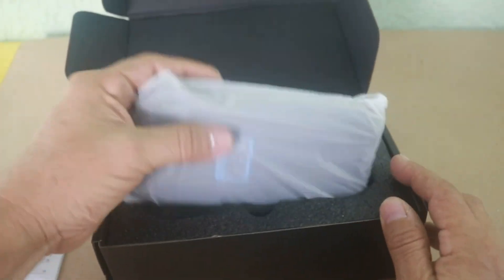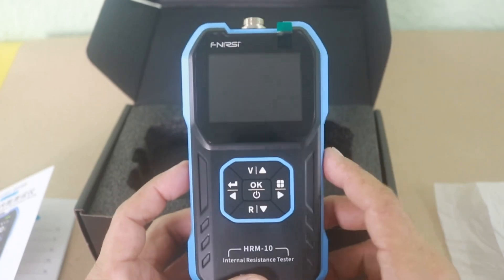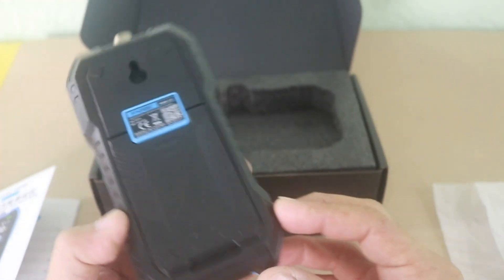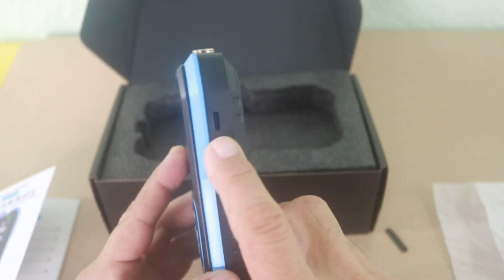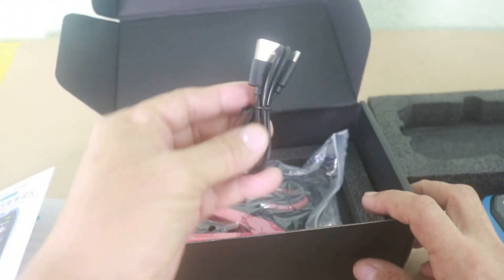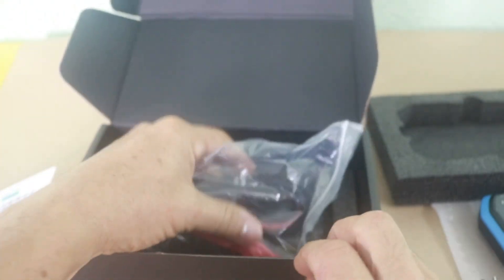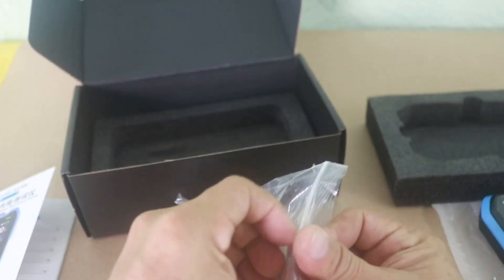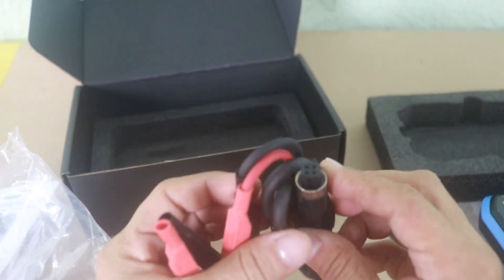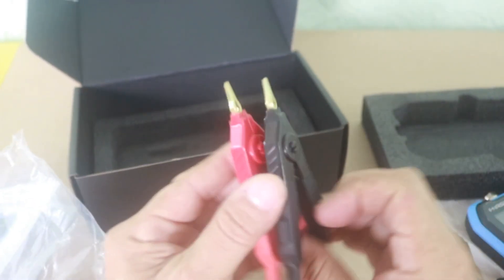Okay, and here is the device. Looks nice. It's a big display. Connector and here is the charging port. Let's see. This is the charging cable USB to type C and this must be the test cables. Here is the connector that goes on the back of the device and the test leads.